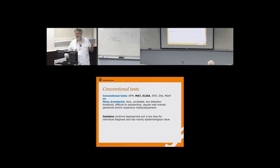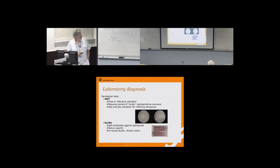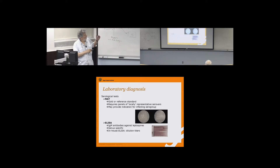Then we have the microscopic agglutination test (MAT) and ELISA, each with several drawbacks. Isolation is evidence of infection, but culturing takes up to four to six months and is not suitable for diagnosis of individual patients, though it has epidemiological value. The MAT is the gold standard with a trend toward serovar specificity, but be careful — you cannot deduce the infecting serovar from MAT results. It may indicate the serovar group, not the serovar itself.